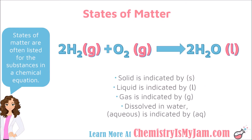It is also very common for a chemical equation to indicate states of matter — whether something is in the liquid, solid, or gas phase. States of matter are indicated after the substance in parentheses. An 'S' in parentheses tells you the substance is a solid, 'L' means liquid, 'G' means gas, and 'AQ' indicates the substance is dissolved in water — it is an aqueous substance.